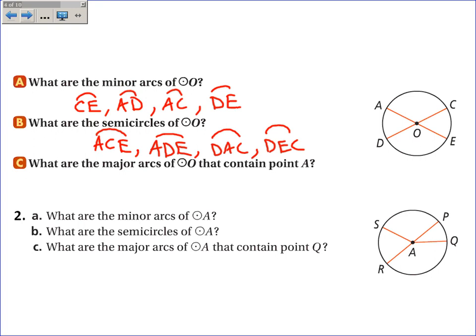What are the major arcs of circle O that contain point A? Now, there are lots of them, so I'll just give a couple. How about DAE, starts at D, goes through A, and ends at E. I could also talk about EDC, starting at E, going through D, and ending at C.